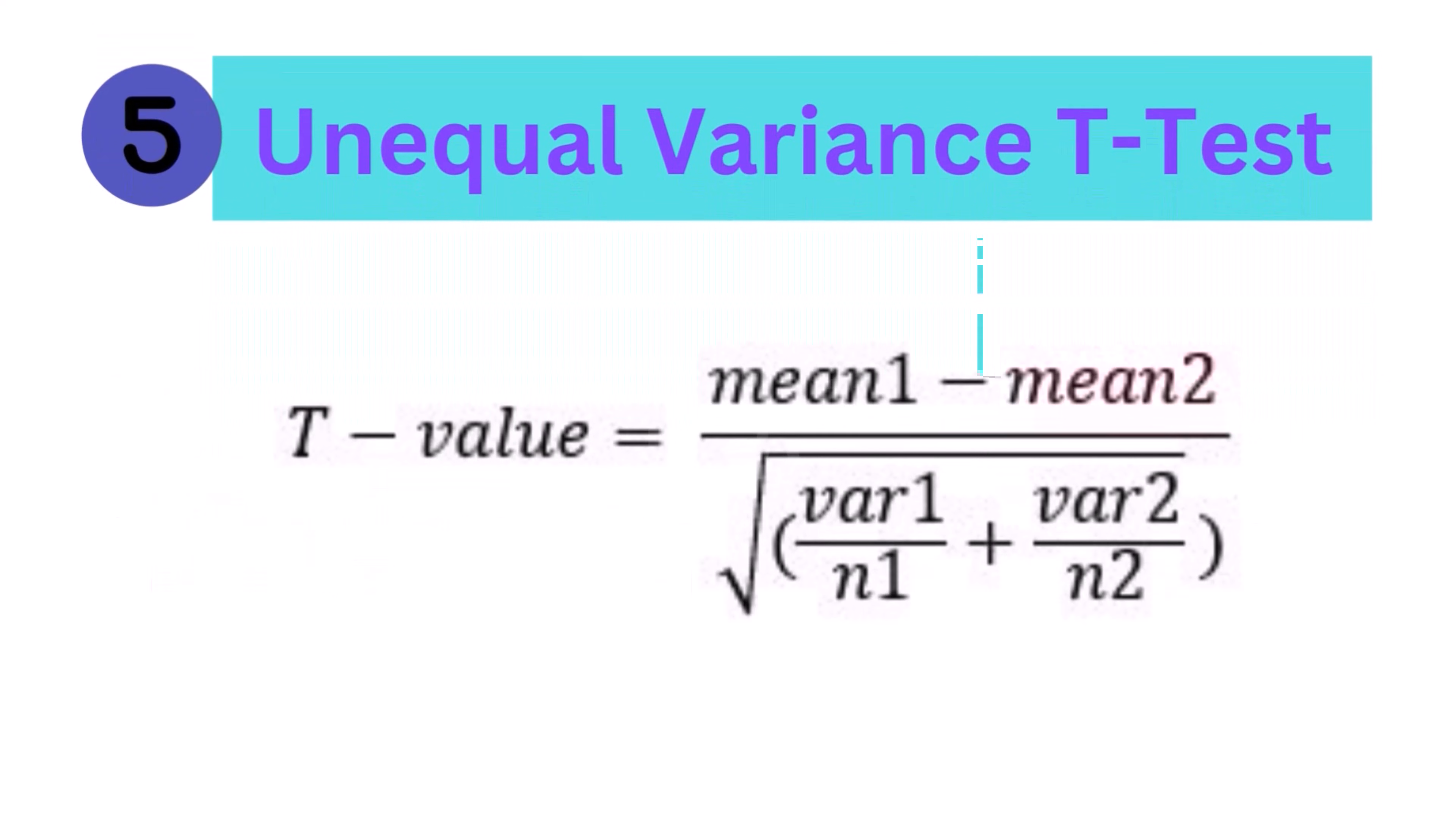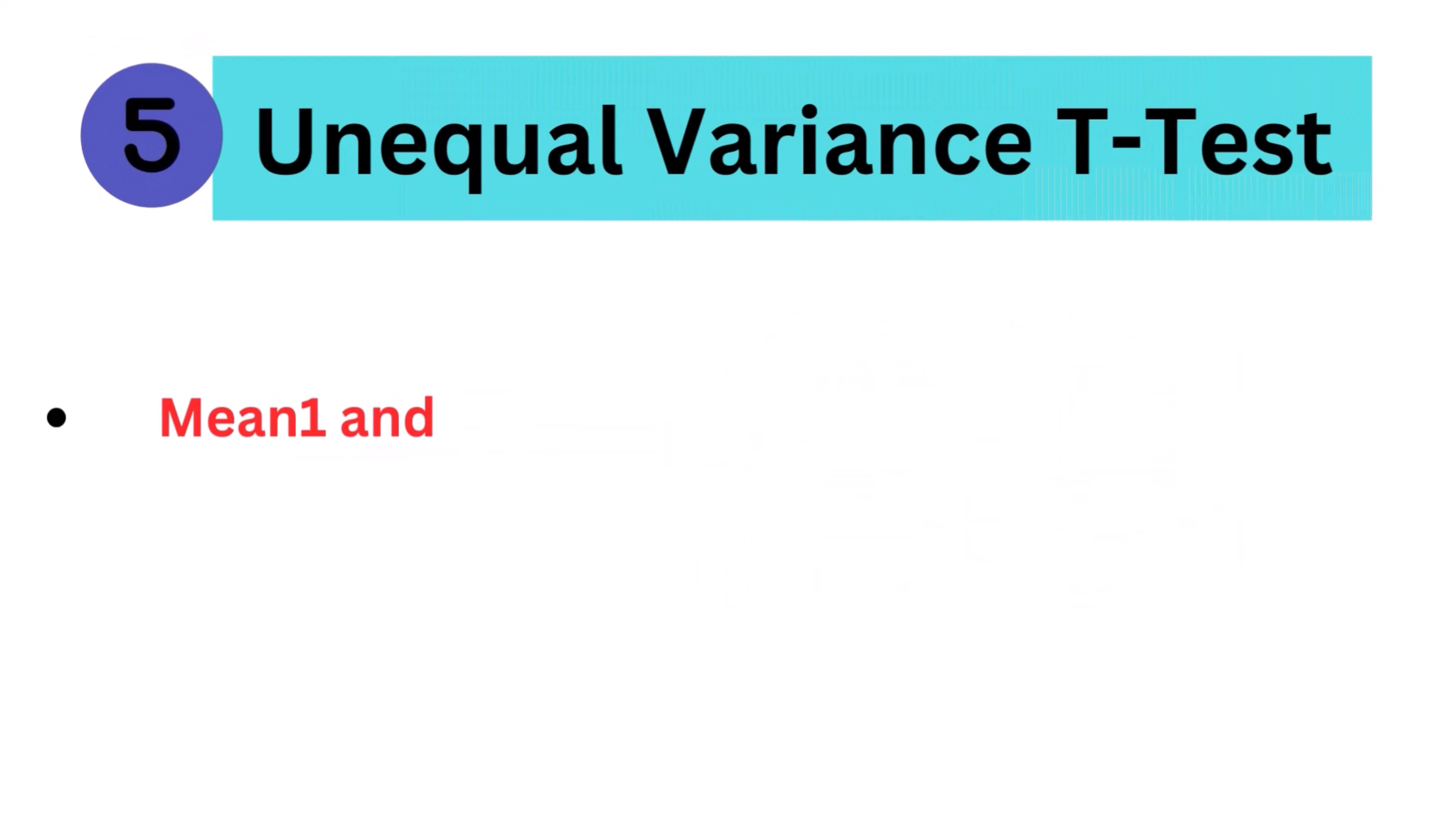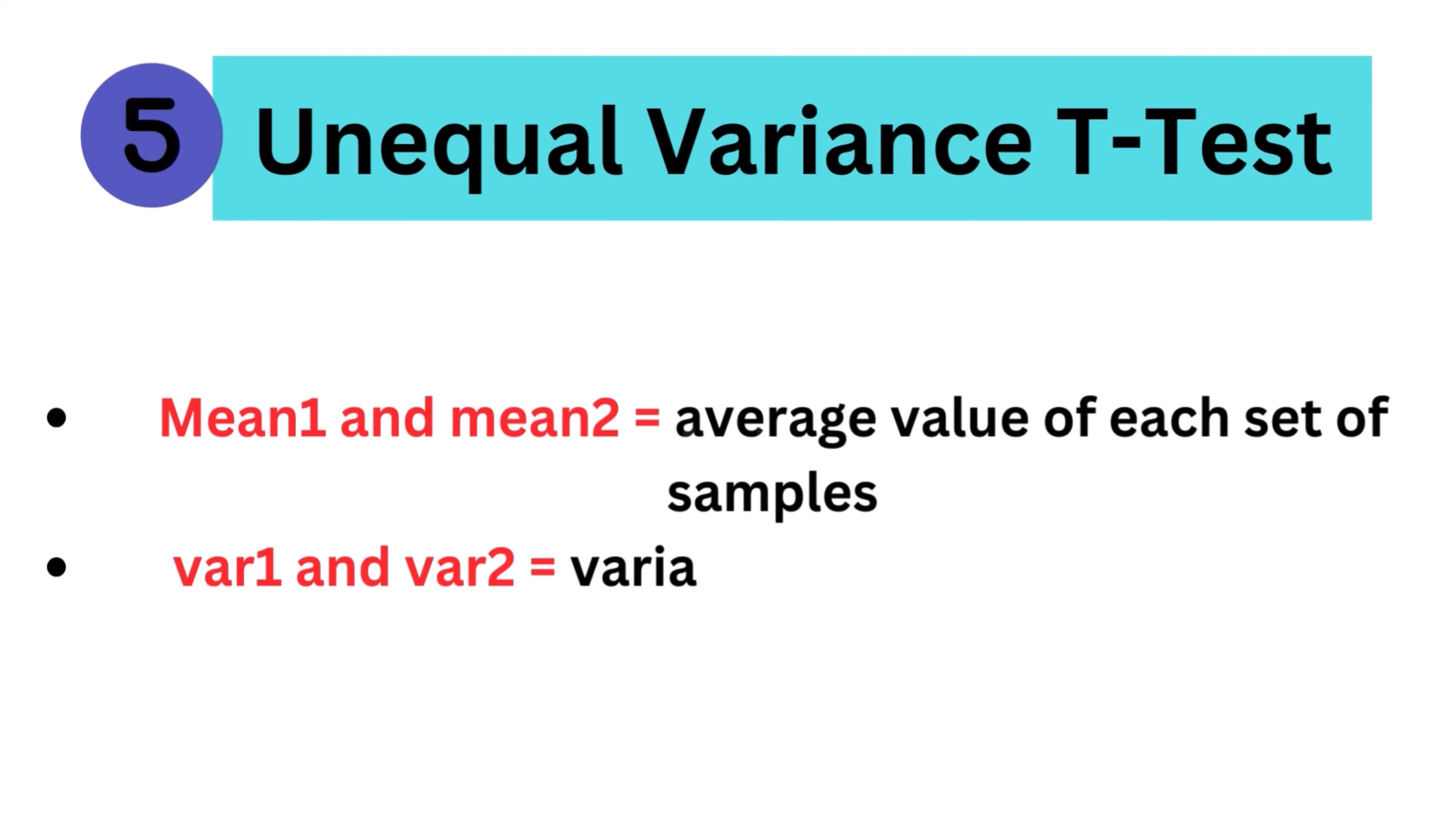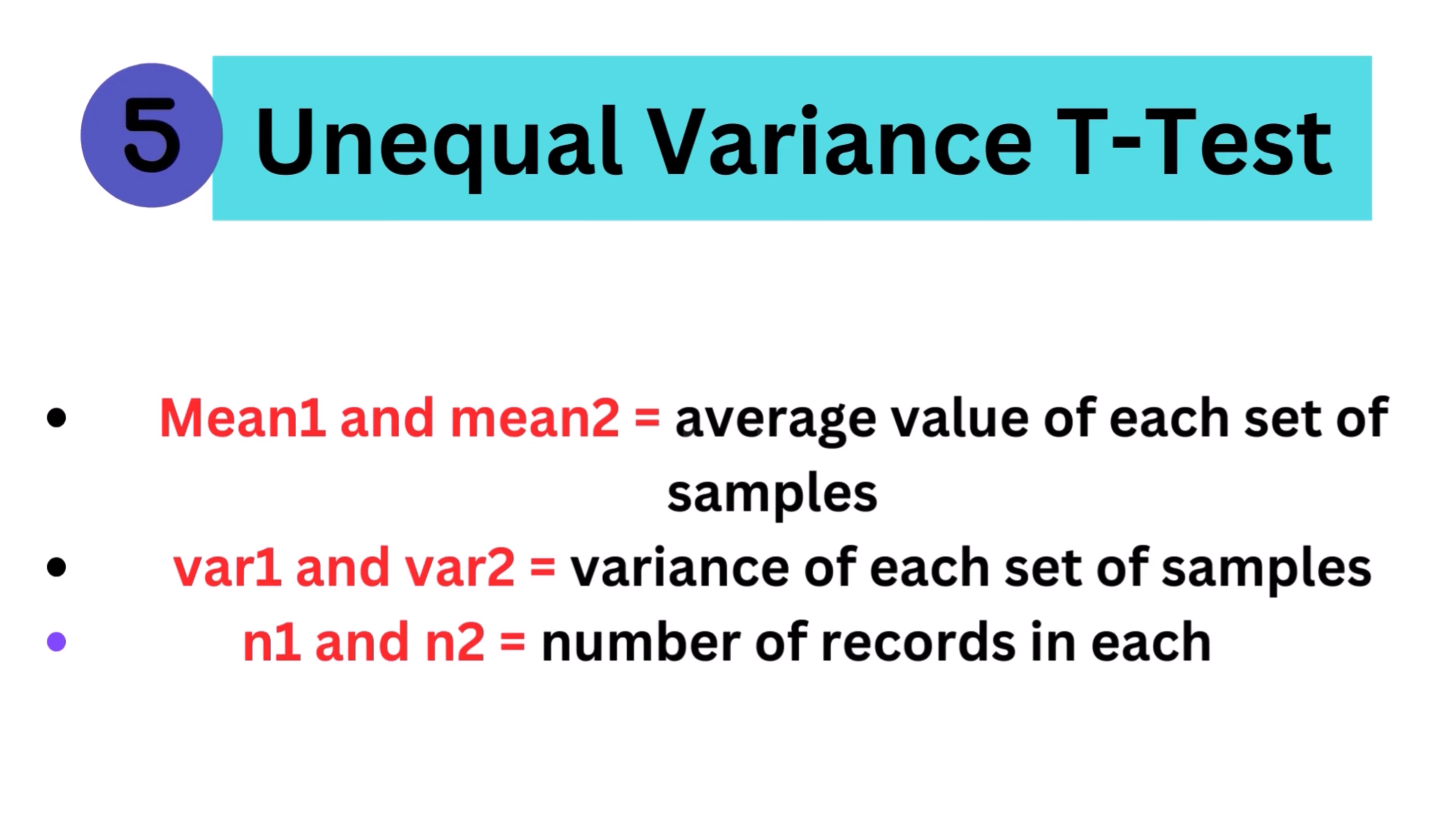5. Unequal variance t-test. The unequal variance testing is used when the variance and the number of samples in each group are different. It is often referred to as Welch's test, and the formula is: mean 1 and mean 2 equals average value of each set of samples, var 1 and var 2 equals variance of each set of samples, N1 and N2 equals number of records in each set.